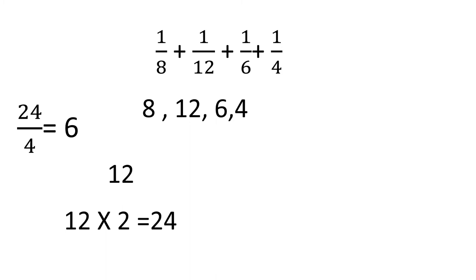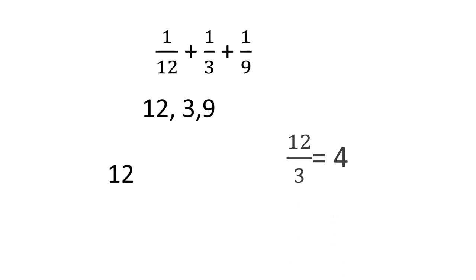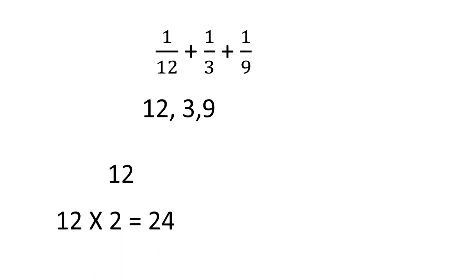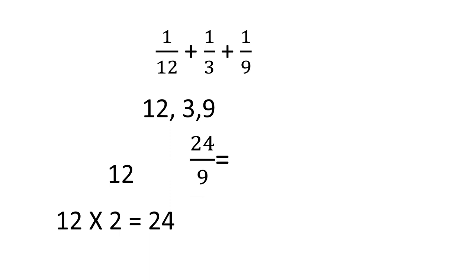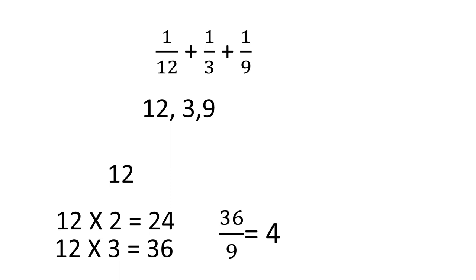We need to find the LCM of 12, 3, and 9. The highest is 12. Dividing: 12 ÷ 3 = 4, but 12 is not divisible by 9. So we try 12 × 2 = 24 — 24 ÷ 9 is not possible. Next: 12 × 3 = 36. Check: 36 ÷ 3 = 12, 36 ÷ 9 = 4. So 36 is the LCM of 12, 3, and 9.